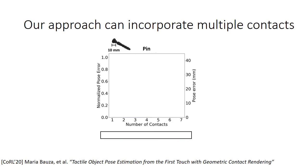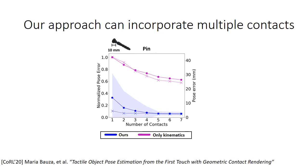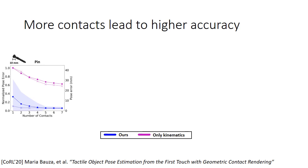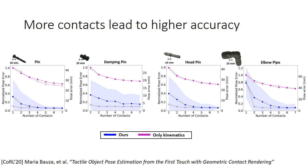We also show results for multiple contacts. If you only consider the kinematics of the sensors, you do not see much improvement, while if you also take into account the contact shapes, then the more contacts you have, the more information you gain, and that is enough to clearly reduce the error. We compute the results for four other objects, and you can clearly see that with our approach, adding multiple contacts has a clear effect on our pose estimation.